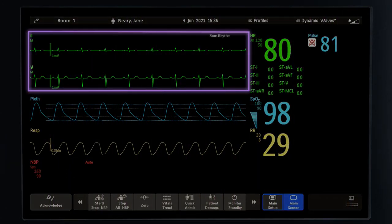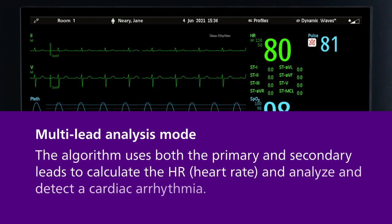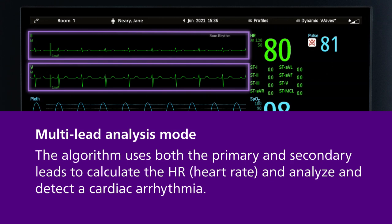Both multi-lead and single-lead modes are available. When in multi-lead analysis mode, the algorithm uses both the primary and secondary leads to calculate the heart rate and analyze and detect a cardiac arrhythmia.